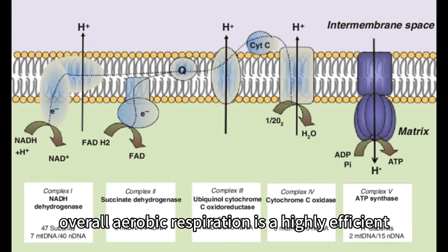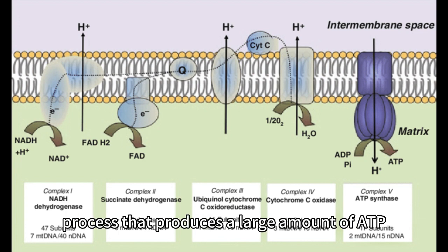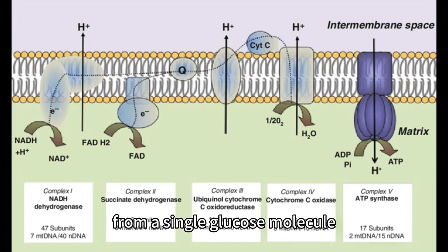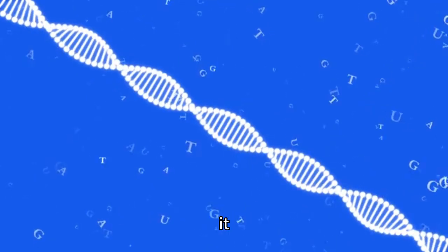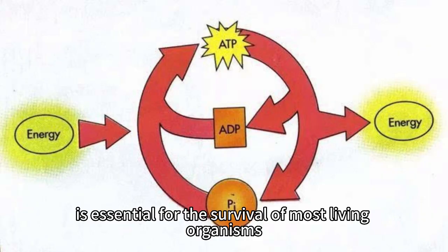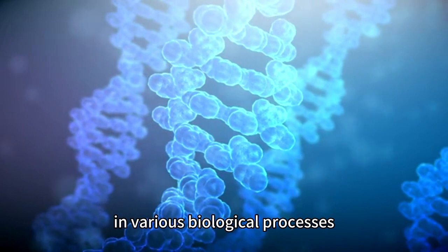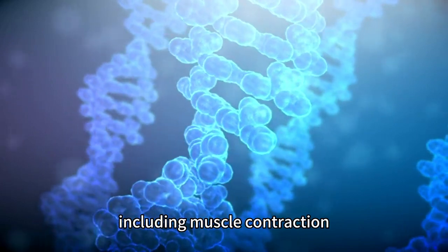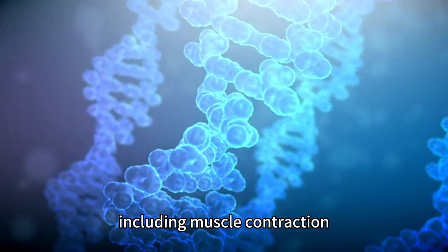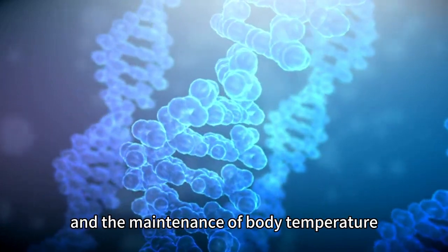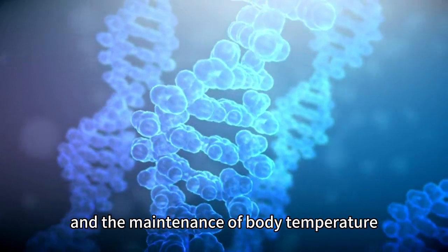Overall, aerobic respiration is a highly efficient process that produces a large amount of ATP from a single glucose molecule. It is essential for the survival of most living organisms and plays a vital role in various biological processes, including muscle contraction, cellular respiration, and the maintenance of body temperature.